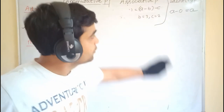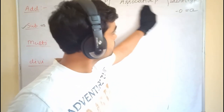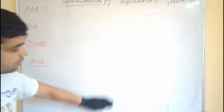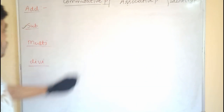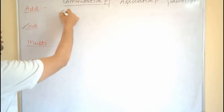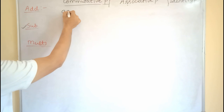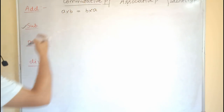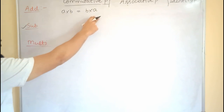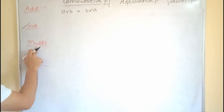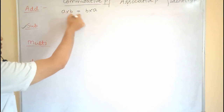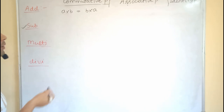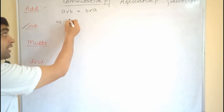We will check the properties for multiplication one by one. We are going to check the commutative property. Commutative property means a into b must be equal to b into a. We change the sequence of the operation, and the operation is multiplication. If they are equal, multiplication follows commutative property; if not, it does not.